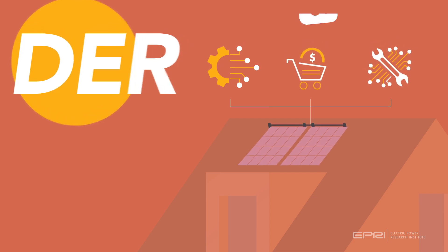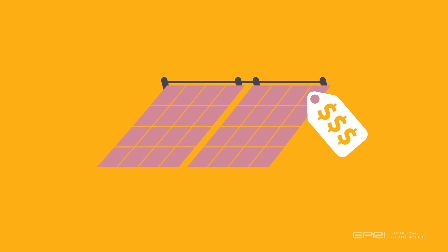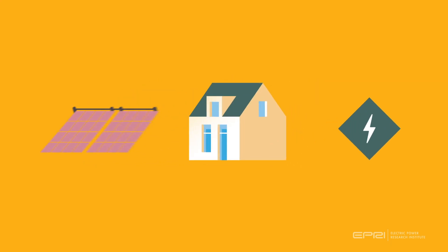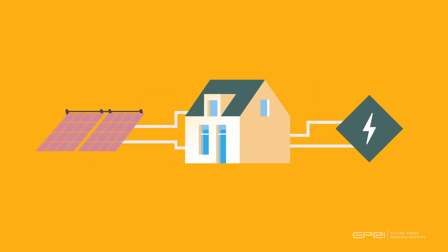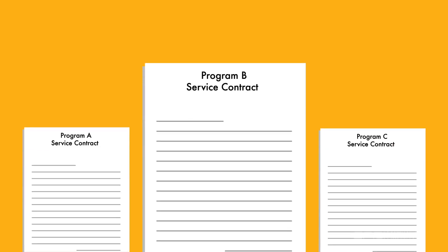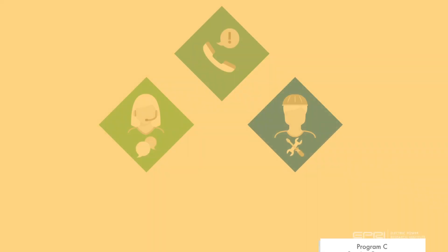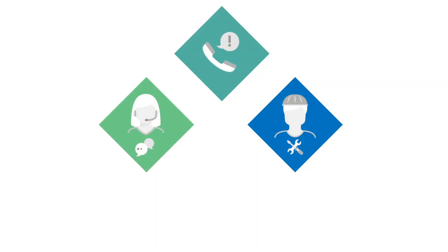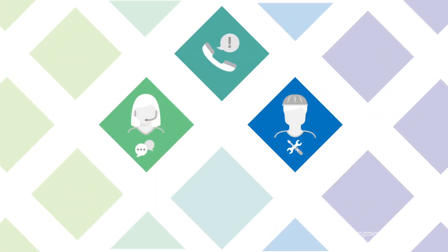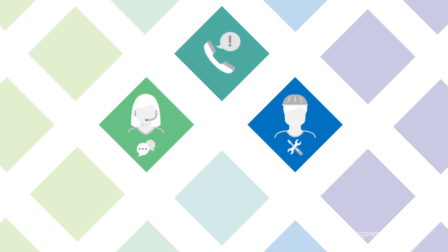When a customer purchases a solar panel, how do they connect it to the utility? What information needs to be shared? What program do they select? And how does the utility or its service provider obtain this request for service?